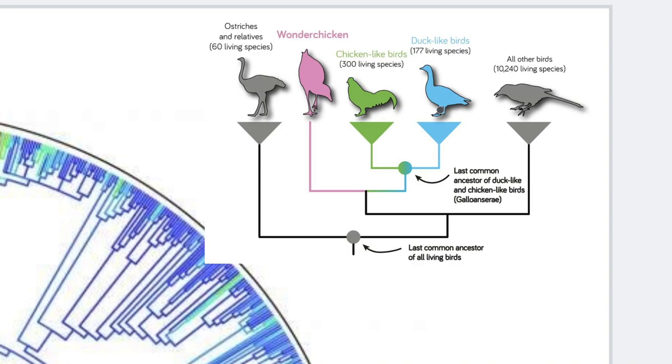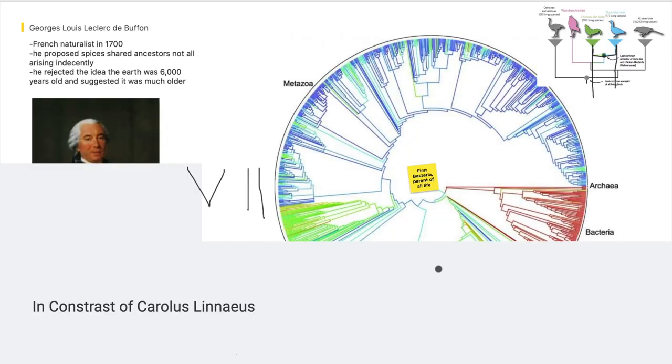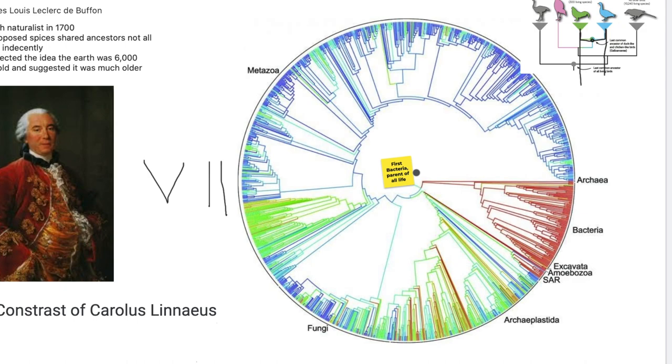So chickens over here and ducks over here had a common ancestor around this point. They evolved differently. Before, people would have thought that they would not have had a common ancestor. Instead, they would have evolved separately from the beginning of time.